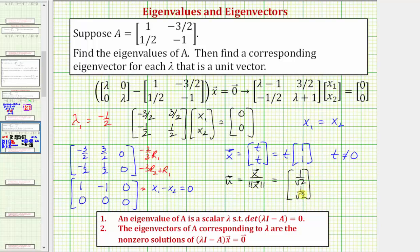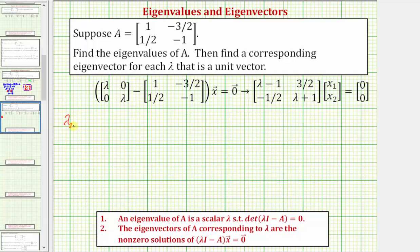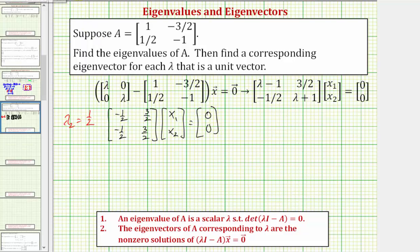We could also use the unit vector in the opposite direction — negative one over square root two, negative one over square root two — but we'll use the positive direction. Now for lambda sub two equals positive one half: substituting one half for lambda gives one half minus one which is negative one half, three halves in the first row, and negative one half and one half plus one which is positive three halves in the second row. The corresponding augmented matrix has a first row of negative one half, positive three halves, zero, and a second row of negative one half, positive three halves, zero.